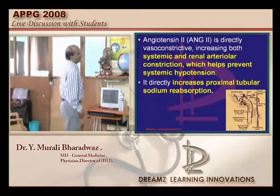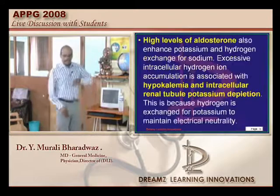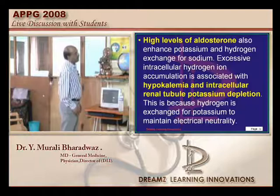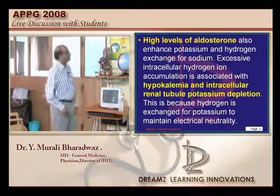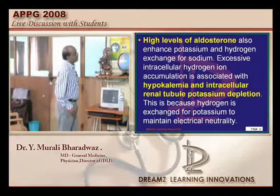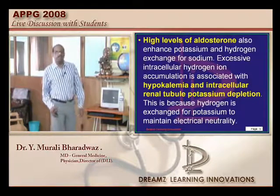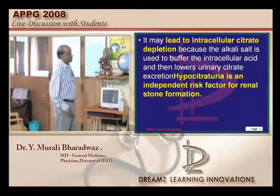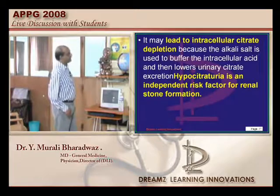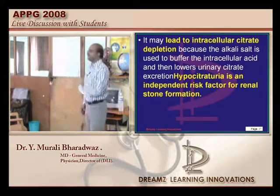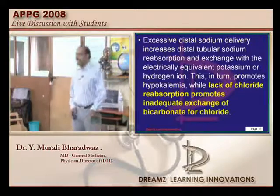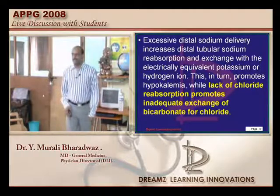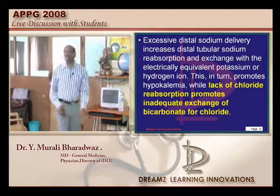Due to high levels of aldosterone from juxtaglomerular hyperplasia, there is increased potassium and hydrogen exchange for sodium. This is why patients with Bartter syndrome show hypokalemia. To summarize, patients with Bartter syndrome have salt losing, normal or low blood pressure, juxtaglomerular hyperplasia, hypokalemia, and growth retardation.